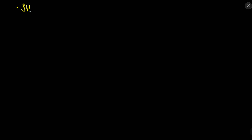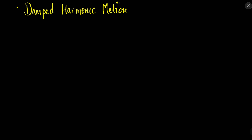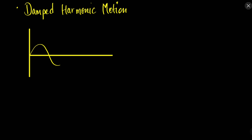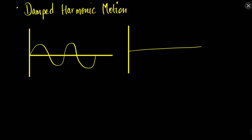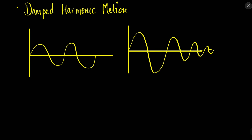Now let's start the last two topics. Till now we have only discussed SHM in which there was no damping, no external influence. But it can happen that there is a case of damped harmonic oscillation — the harmonic motion is decaying and its amplitude is reducing with time. For example, the usual SHM looks approximately like a constant sinusoid, but the damped SHM will look like a decaying sinusoid where the amplitude tends to decrease with time.